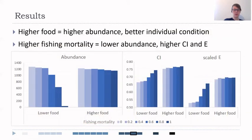When we compare the results of high food and low food scenarios, at high food, as expected, the system supported higher abundance in the population, as well as better individual condition, regardless of the fishing mortality.